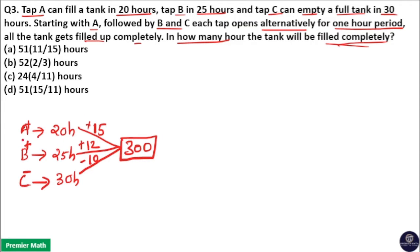A's efficiency is 15, meaning A can fill 15 liters in one hour. B's efficiency is 12, meaning B can fill 12 liters in one hour. C's efficiency is minus 10, meaning C can empty 10 liters in one hour.